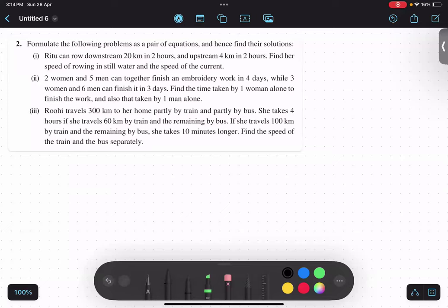Over here in the third part, Rohi travels 300 kilometers partly by train and partly by bus. So this is the long distance she has to cover from point A to point B.